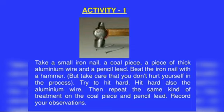Let's do one activity. Take a small iron nail, a coal piece, a piece of thick aluminum wire, and a pencil lead. Beat the iron nail with a hammer — the nail will bend. When you hit harder it bends more. Now hit the aluminum wire the same way. The aluminum wire also changes its shape, and if beaten harder it can be changed into sheets.